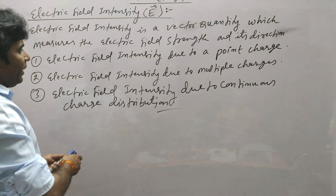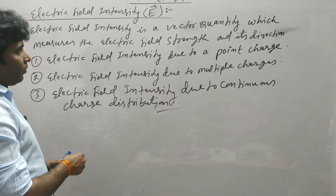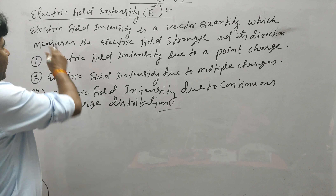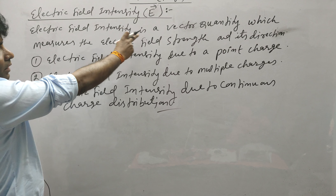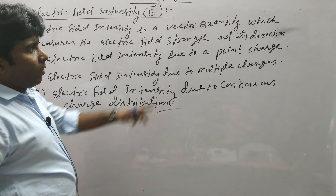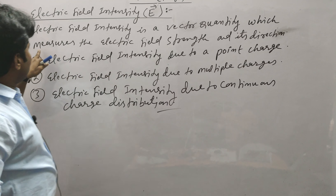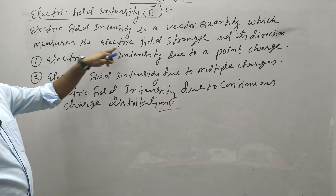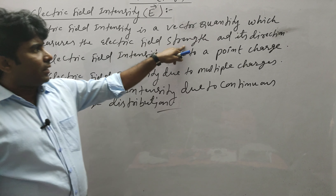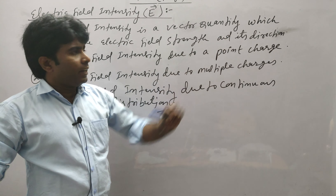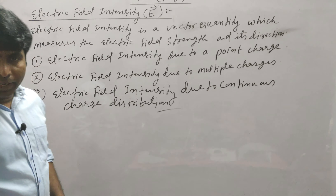Electric field intensity is a vector quantity which measures the electric field strength and its direction.